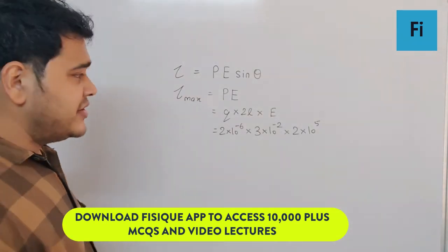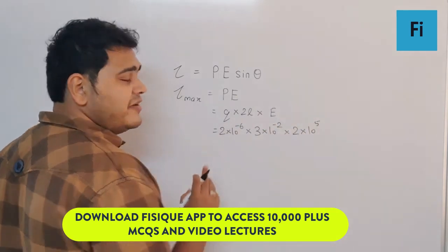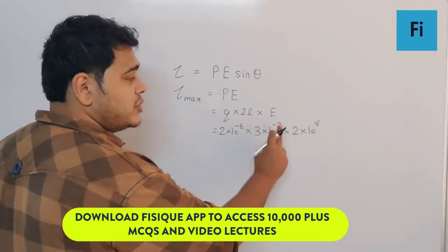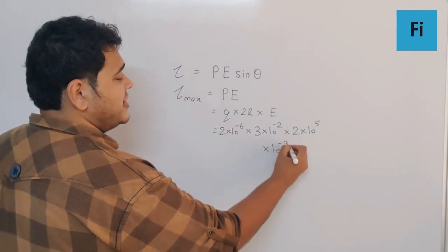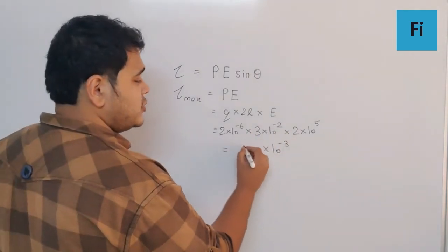Definitely, -6 plus 5 will be -1, -1 minus 2 will become -3, so we have the power of 10 as -3. Now 2×3 is 6, 6×2 is 12.